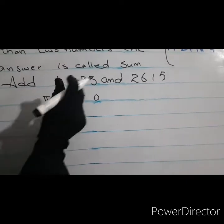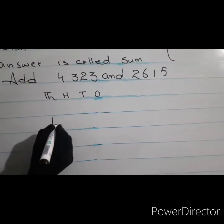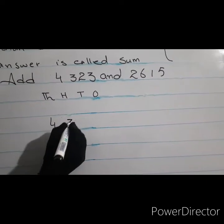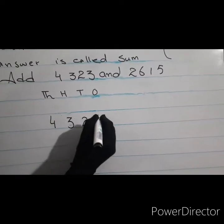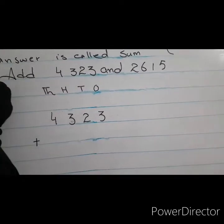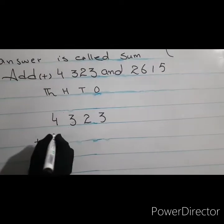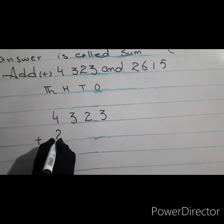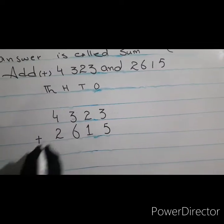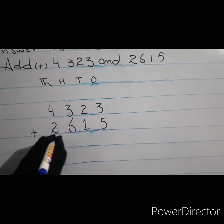First, we write the place values. Then we write the numbers in vertical form: four thousand three hundred twenty-three. Sign of addition is like this. And two thousand six hundred and fifteen. Now we add both numbers.